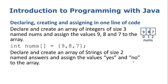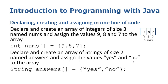Similarly for an array of strings: declare and create an array of strings of size 2 named answers and assign the values yes and no. The code is string answers[] equals {"yes", "no"}. Because we are dealing with strings we use quotation marks, whereas with integers we did not — that's simply because one is a string and one is an integer. The result is a string array called answers with yes in index 0 and no in index 1.